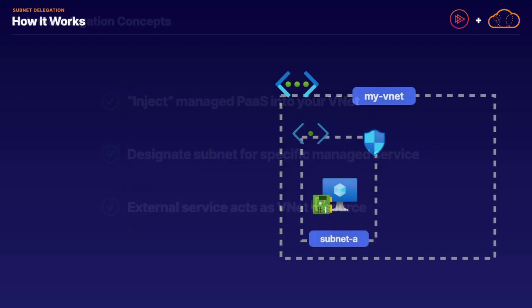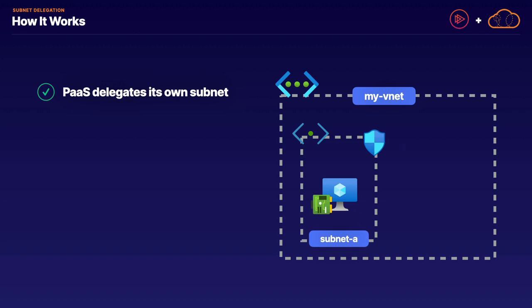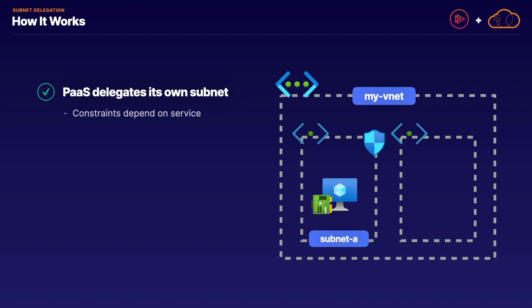How exactly does this work? The main thing you need to keep in mind is that there isn't a single method of implementing delegated subnets — it relies purely on the specific service we're trying to implement. However, there are a few key points to cover. A platform-as-a-service service will delegate its own subnet inside of your virtual network, but some of the constraints and boundaries of that delegated subnet depend on the service that we are injecting into our network.